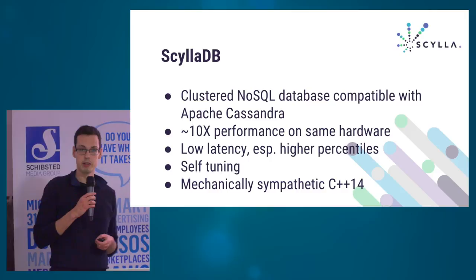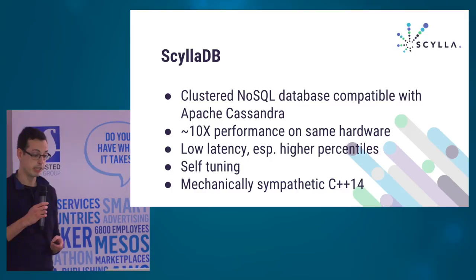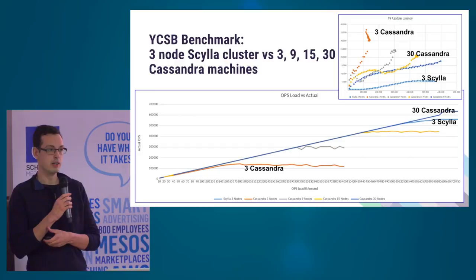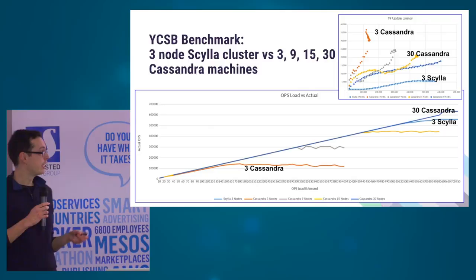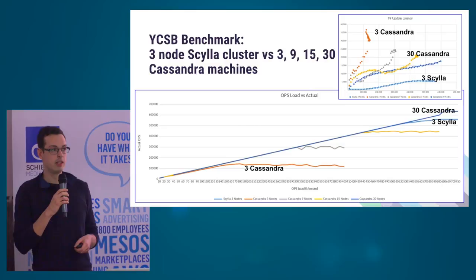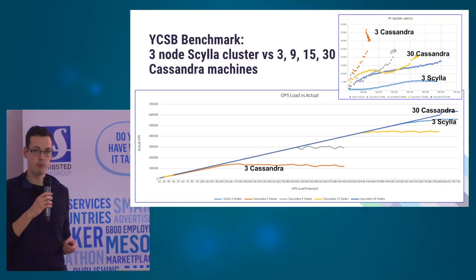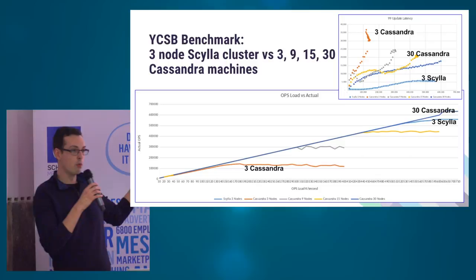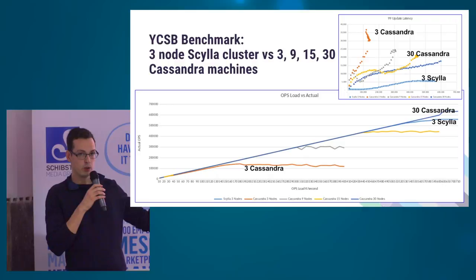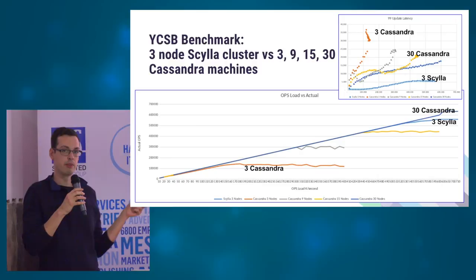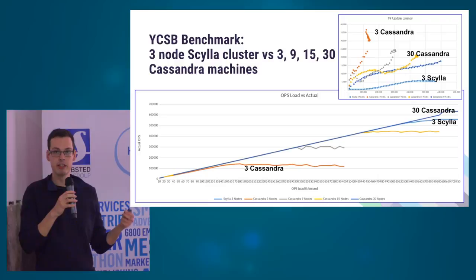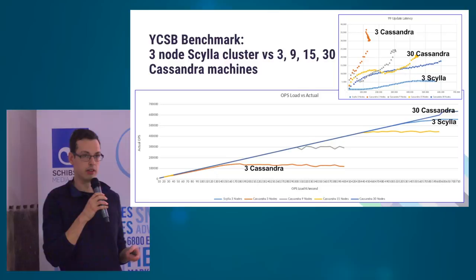And it is written in C++. Here there's a benchmark comparing a three-node Scylla cluster against a bunch of Cassandra clusters. You can see on the bottom graph that a three-node Scylla cluster is competitive with a 30-node Cassandra cluster — they have about the same throughput. However, if you look at the top graph, you'll notice it's a graph for the 99th percentile of latency, and it tells a different story: Scylla has much lower latencies than Cassandra. This was all done on AWS on the same hardware.